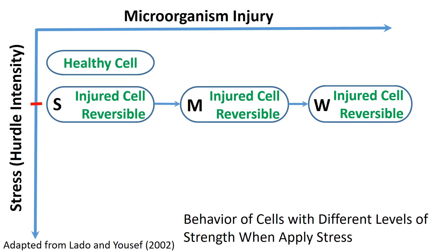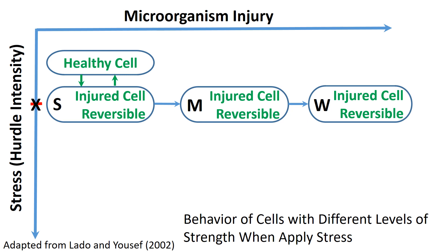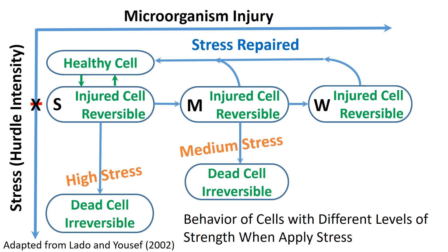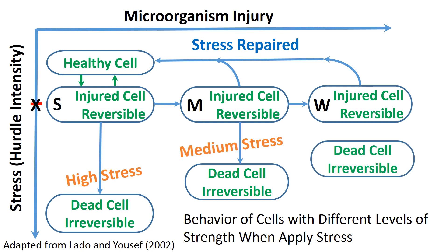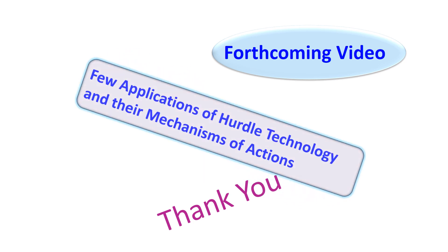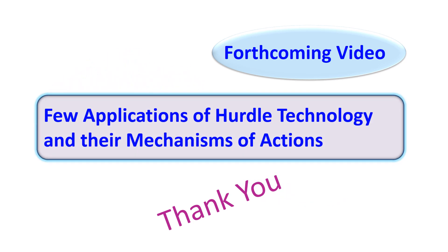The injured level depends on the strength of the cell against the stress or hurdle. Low-injured cells need less stress to kill, while stronger injured cells need a higher level of stress to kill, whereas weaker injured cells need a lower level of stress. In the forthcoming videos, I will provide a few applications of hurdle technology in different foods and their mechanisms of action. Thank you.